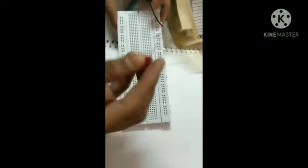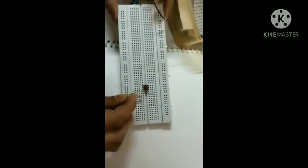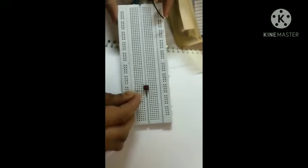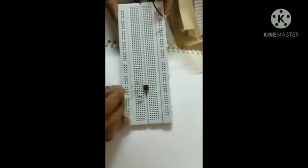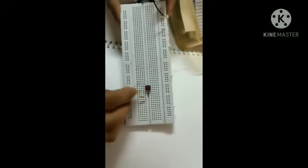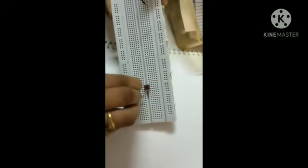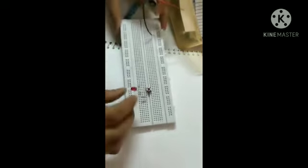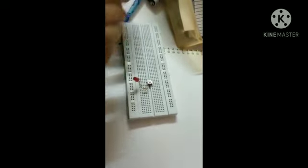The anode terminal of the LED, meaning the longer leg, is inserted in this way. The shorter leg, that is the cathode terminal of LED, is inserted in another column. Now you have to insert the battery wires.